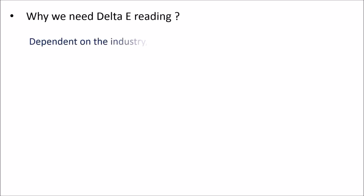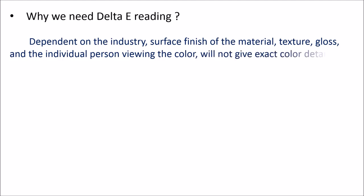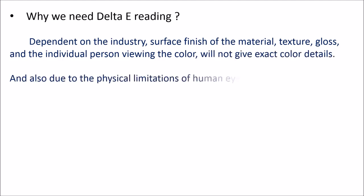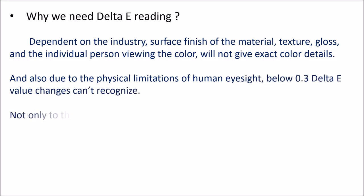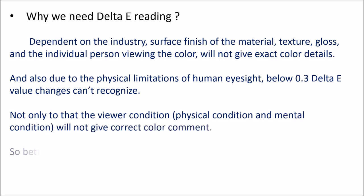We need delta E readings because, dependent on the industry, surface finish of the material, texture, gloss, and the individual person viewing the color, visual assessment will not give exact color details. Also, due to the physical limitations of human eyesight, below 0.3 delta E, value changes cannot be recognized. Not only that, but the viewing condition, physical condition, and mental condition of the observer will not give correct color assessment. So the better color reading method is to go for instrumental reading.